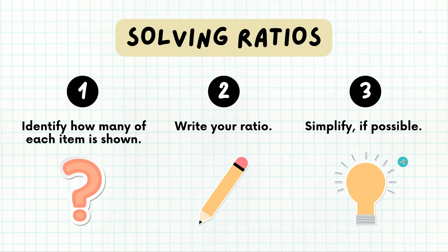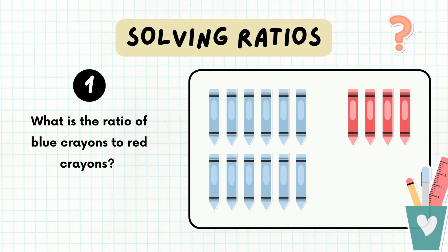Then you need to write your ratio in one of the three ways we just explained, and finally we would simplify if possible. Let's take a look at what I mean. So what is the ratio of blue crayons to the ratio of red crayons? Well, let's take a look. I have one, two, three, four, five, six, seven, eight, nine, ten, eleven, twelve blue crayons and one, two, three, four red crayons. So I know that I have 12 to 4. Okay, now the order matters. I want everyone to say order matters.